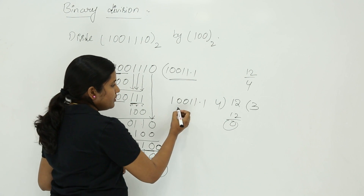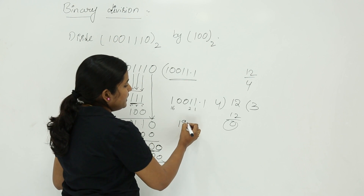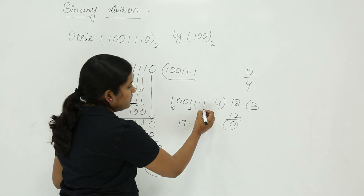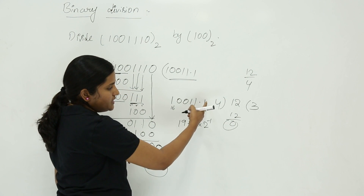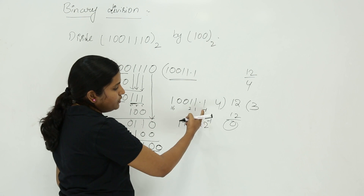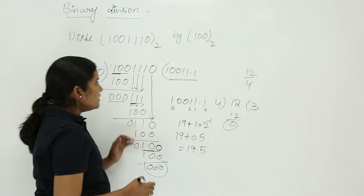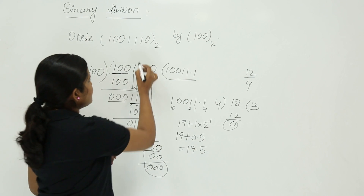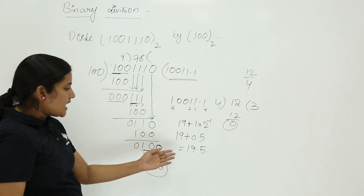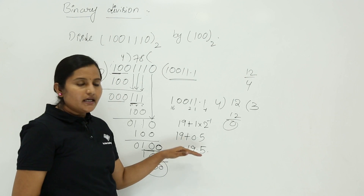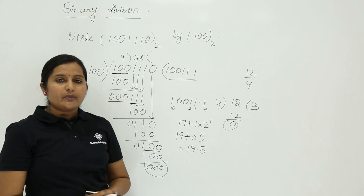To verify: decoding 10011.1 gives sixteen plus two plus one equals nineteen for the integer part, and the fractional bit is one times two inverse, which is point five. So the result is nineteen point five. The original binary number 1001110 has a value of seventy eight. Seventy eight divided by four equals nineteen point five — this matches the decimal system. So the result of dividing these two binary numbers is 10011.1, and in the same way we can perform any binary division.